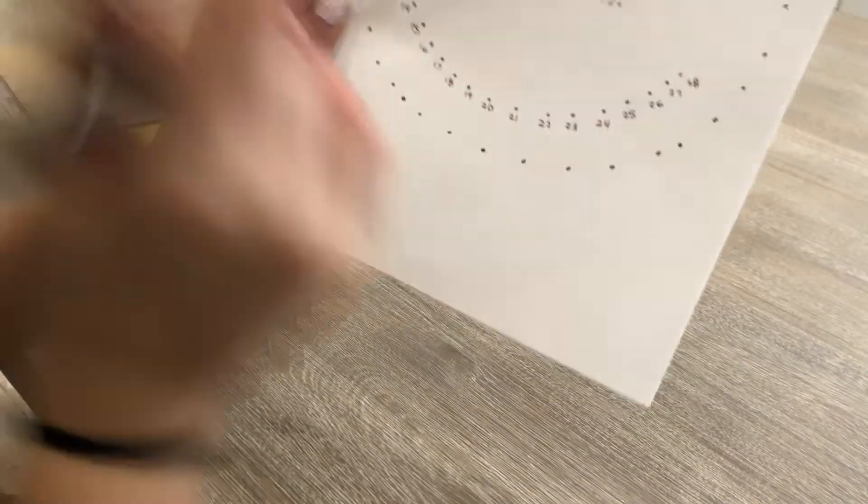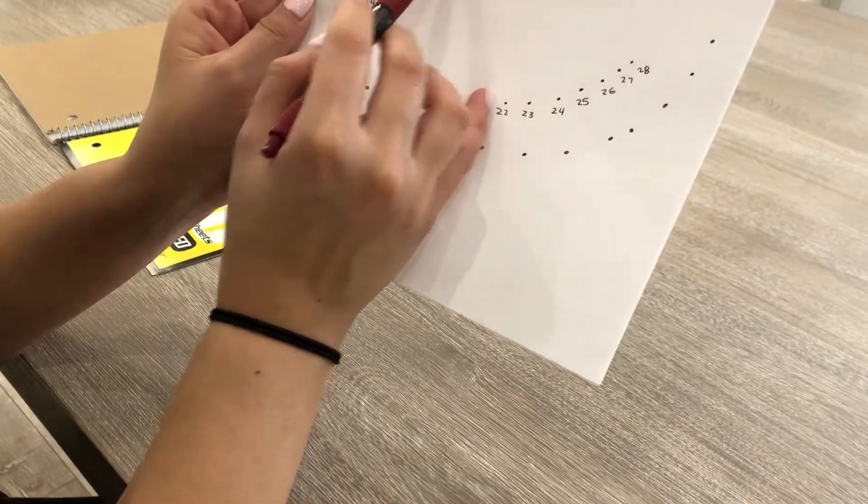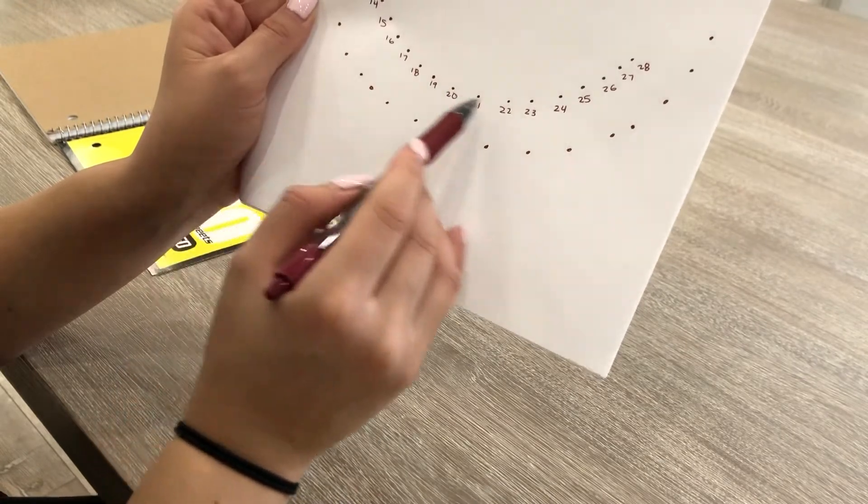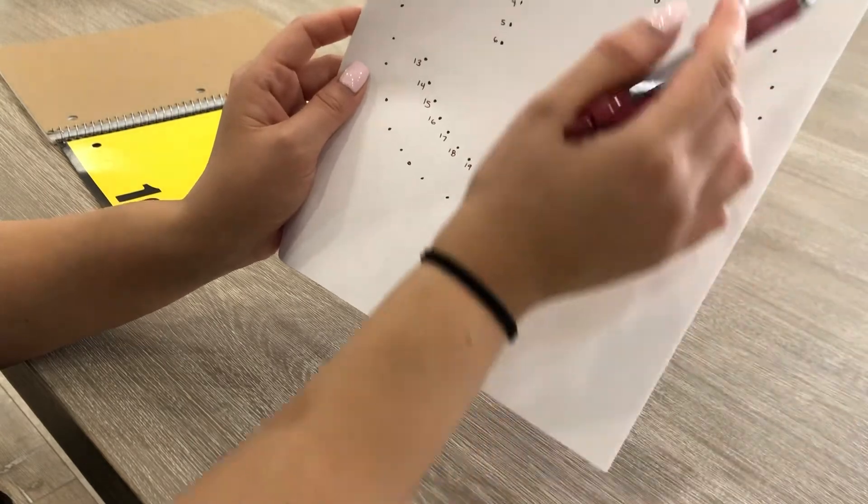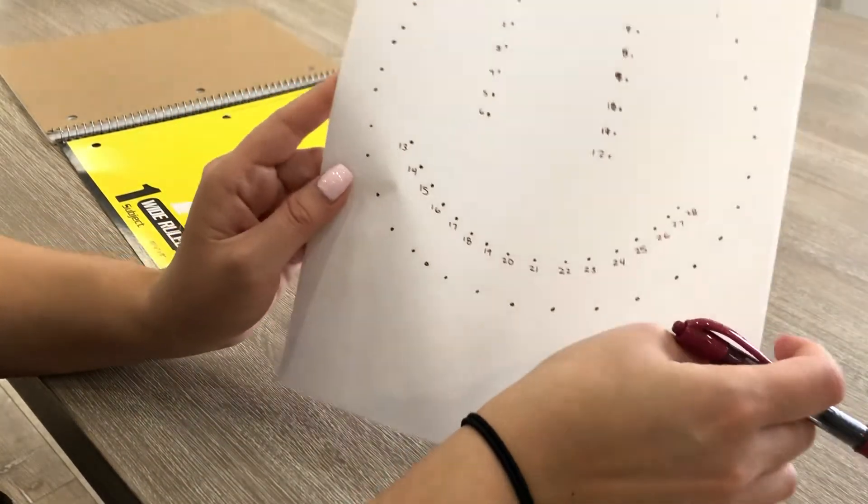So we have so far, we have 28 numbers. So we went from 1 to 6, 7, 8, 9, 10, 11, 12, and then we went all the way up to 28. So if you'd like, you may stop here or go all the way to the end. I am going to go all the way to the end. So we stopped at 28 here. I am just going to continue from the top.